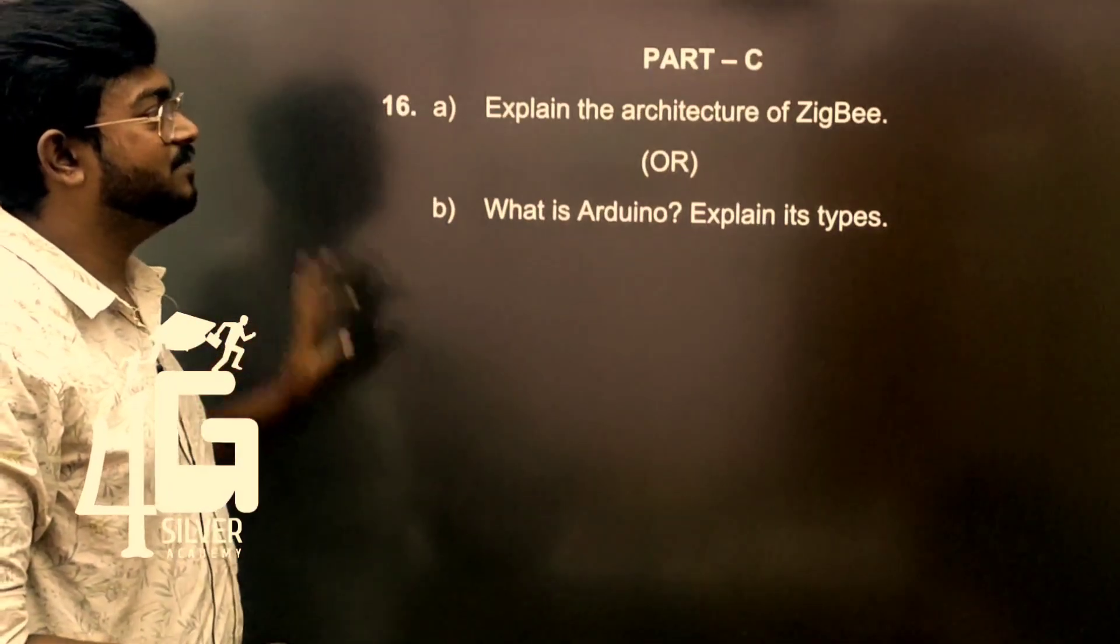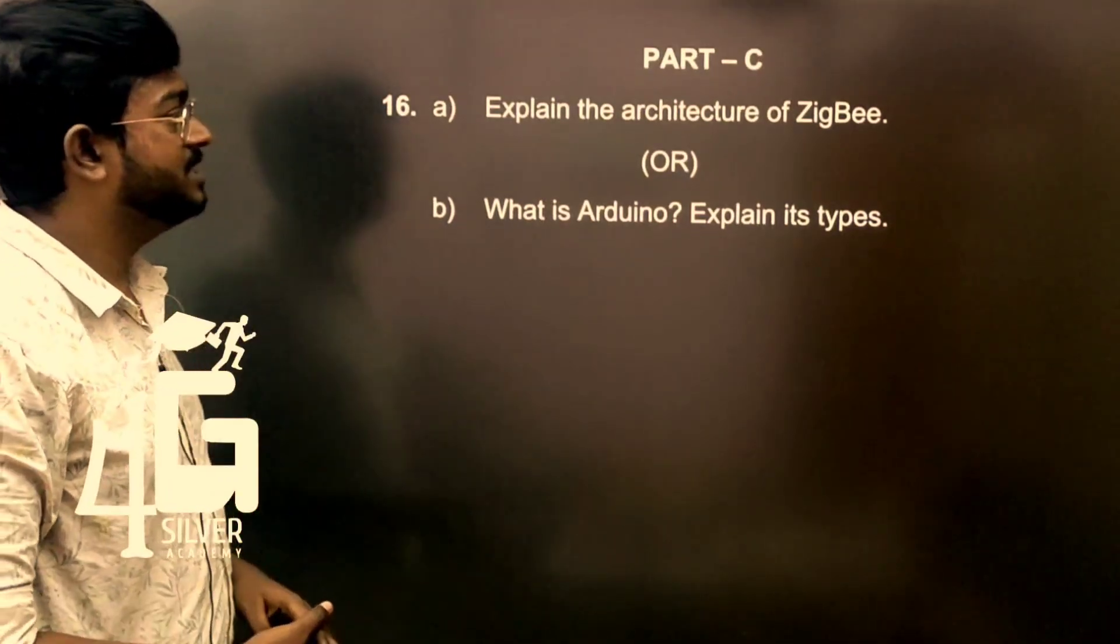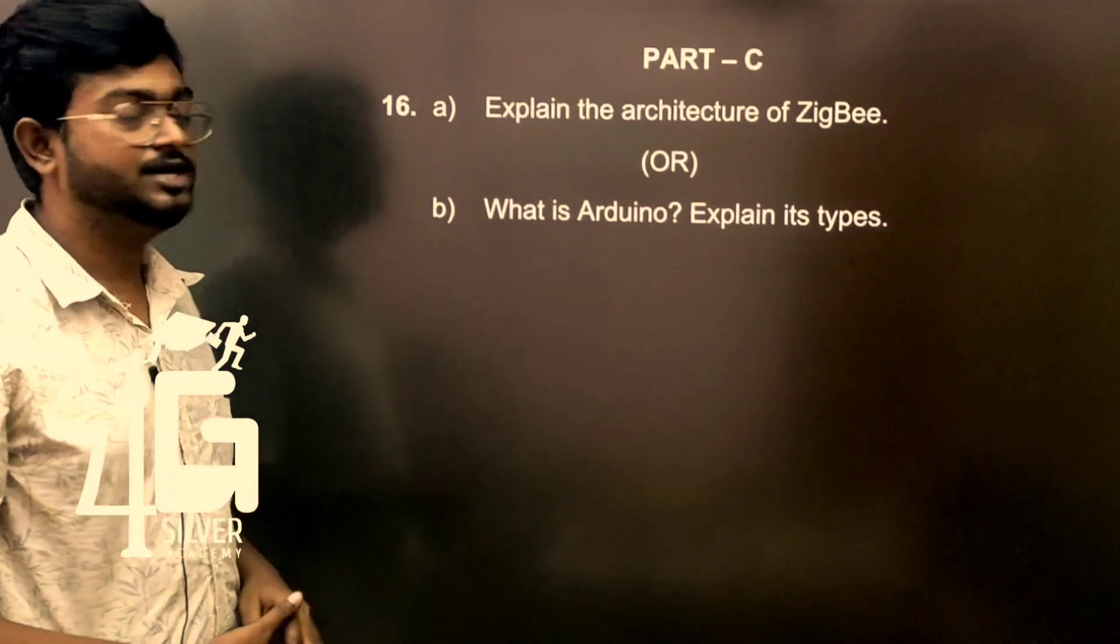Part C important questions: Explain the architecture of Zigbee. What is Arduino? Explain its types. If you have this content, it's easy to answer. Watch other episodes in the appropriate playlist. Fujisilver Academy, Stealth Success Direct.